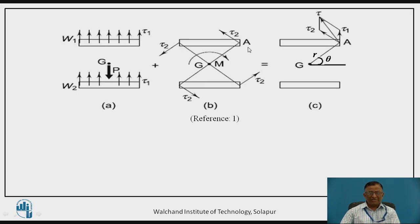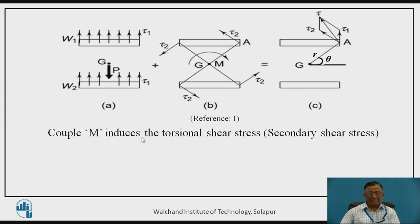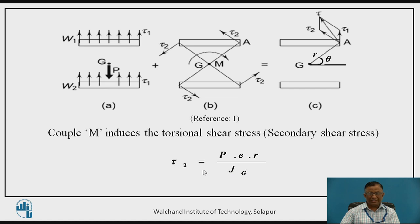Another shear stress is introduced because of the couple — the torsional moment — and this is calculated as the secondary shear stress using the torsion equation: τ2 = Torque × r / J, where torque is the moment P × e, r is the distance from CG, and J is the polar moment of inertia Jg.